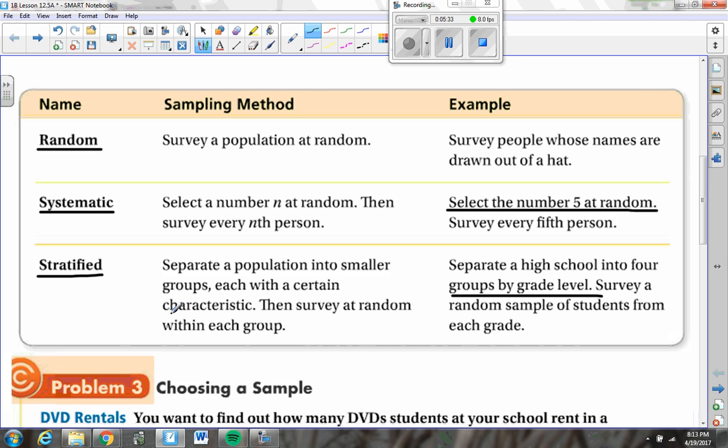You can also do that if you think men and women are going to have different responses to your survey. You can sample men separately from women and combine them to make the stratified sample where you've just separated your population into two other groups with a certain characteristic. So we have random samples where everything's just totally random. We have systematic samples where we pick every fourth person or every eighth person or whatever. And we have stratified samples where we pick a random sample from different groups within a population because of a certain characteristic.